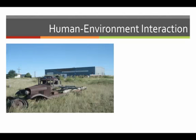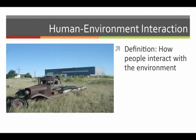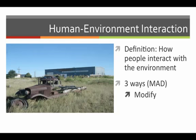Human environment interaction is how people interact with their environment. There are three general ways people interact with their environment: people modify their environment, adapt to their environment, and depend on their environment.